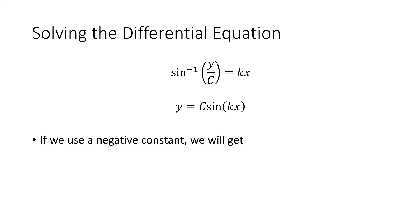If we ended up using a negative constant we'll get cosine of kx. C times cosine of kx is our solution.